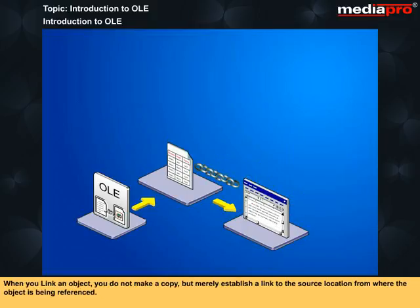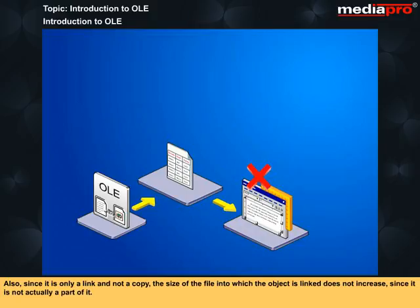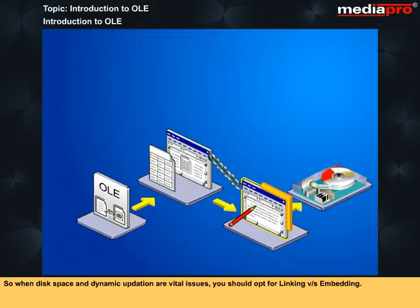When you link an object, you do not make a copy but merely establish a link to the source location from where the object is referenced. Any changes to the source object will automatically get updated in the linked version. Also, since it is only a link and not a copy, the size of the destination file does not increase. So when disk space and dynamic updation are vital issues, you should opt for linking versus embedding.